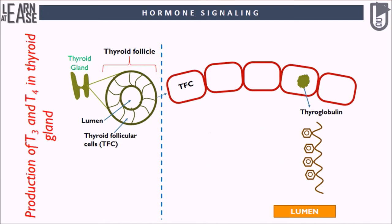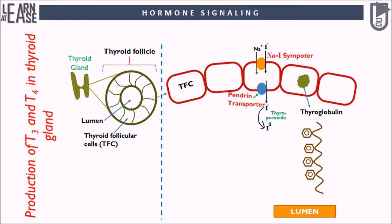A sodium iodide symporter pumps iodide (I-) actively into the cell, which previously crossed the endothelium by largely unknown mechanisms. This iodide enters the follicular lumen from the cytoplasm via the transporter pendrin in a purportedly passive manner. In the colloid, iodide (I-) is oxidized to iodine (I0) by an enzyme called thyroperoxidase.